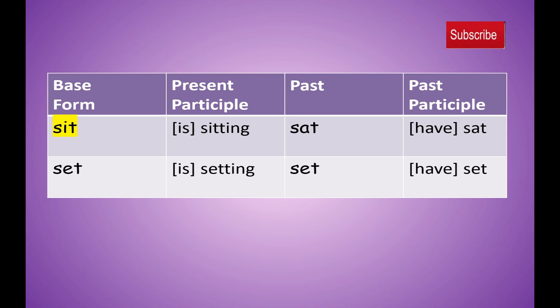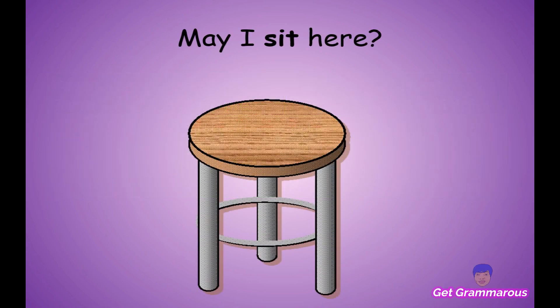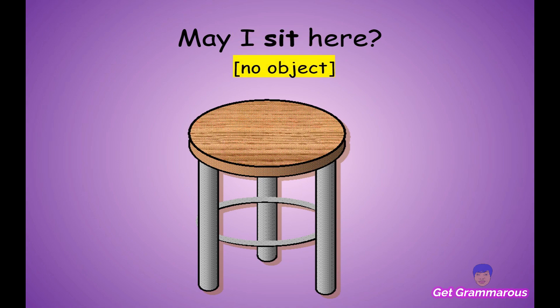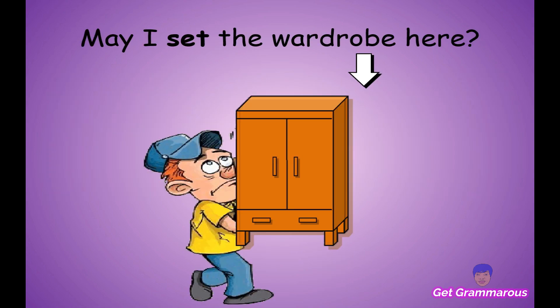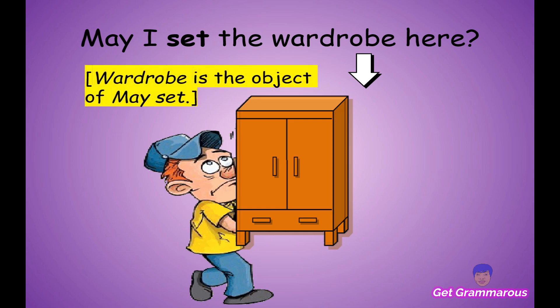For example, 'May I sit here?' — 'sit' has no object; the verb is not done to anything. Now look at 'set' in a sentence: 'May I set the wardrobe here?' — 'wardrobe' is the object of 'set'; it's the thing that receives the action.